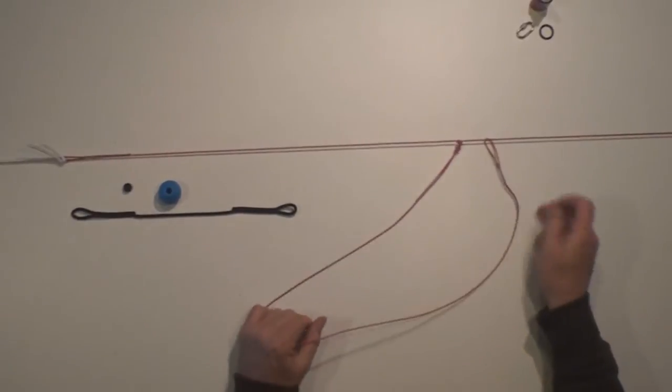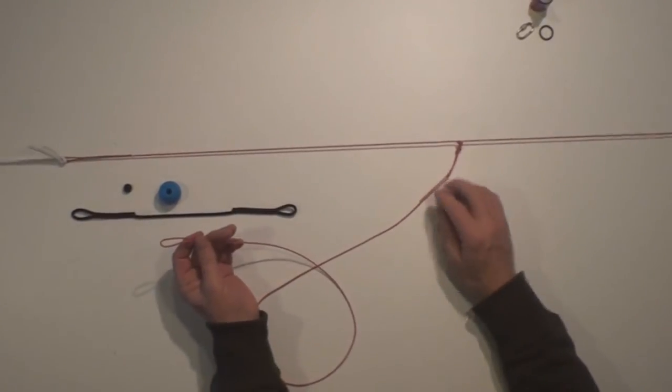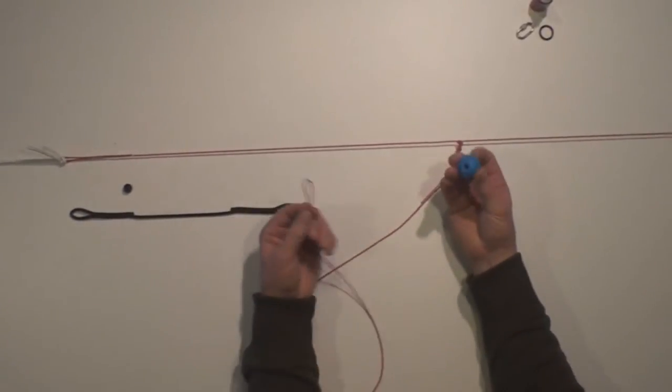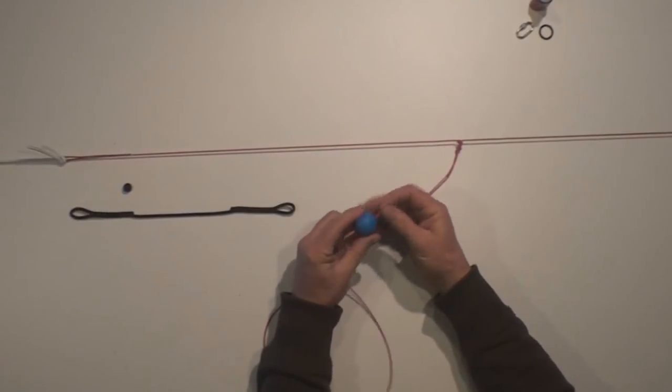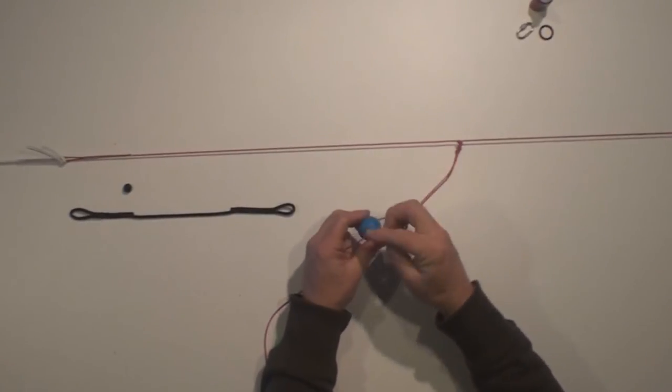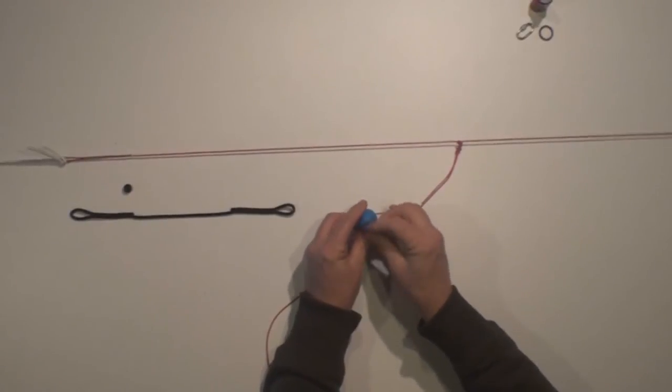And then we're going to attach it to the risers. But first of all, we just assemble it. Now the new assembly is very simple. So we take the blue ball, we pass it through the ball, and then we go through again. Like so.